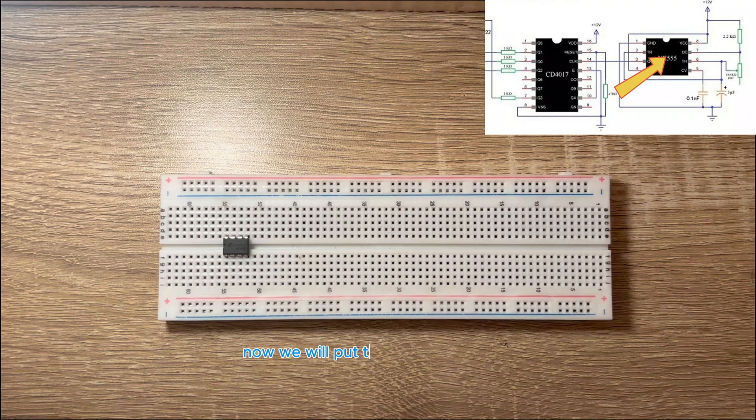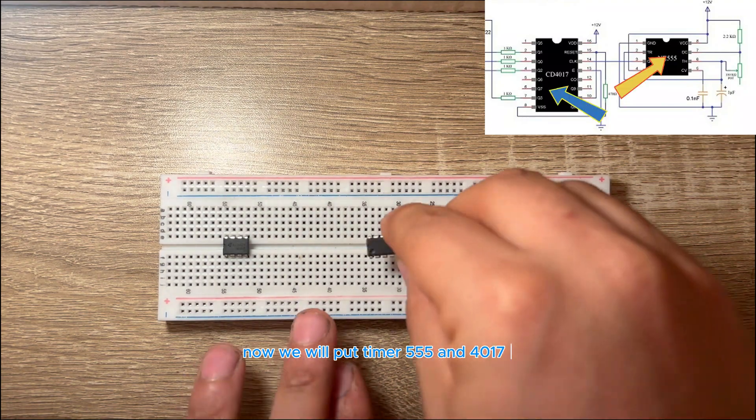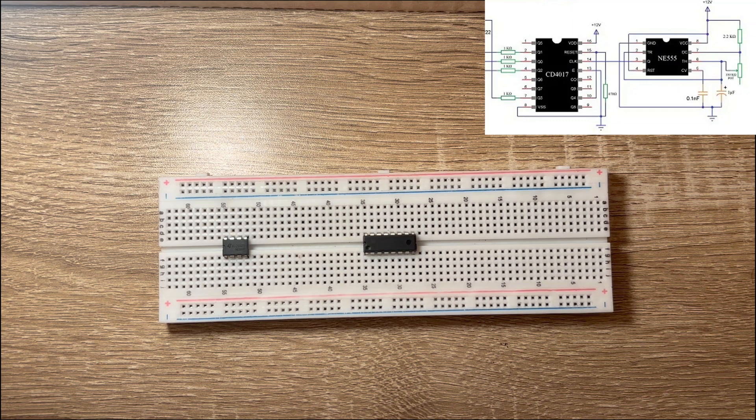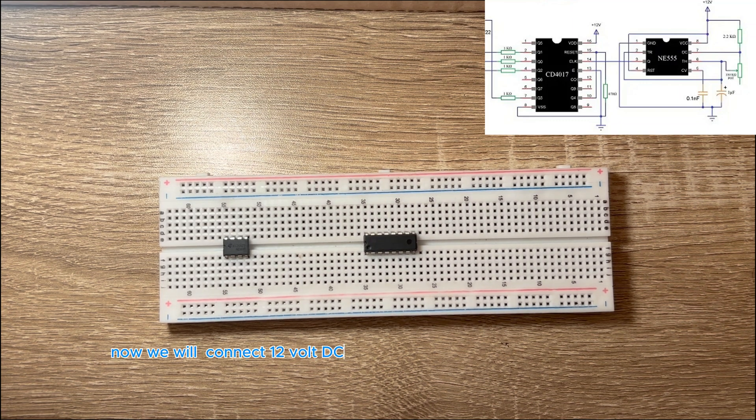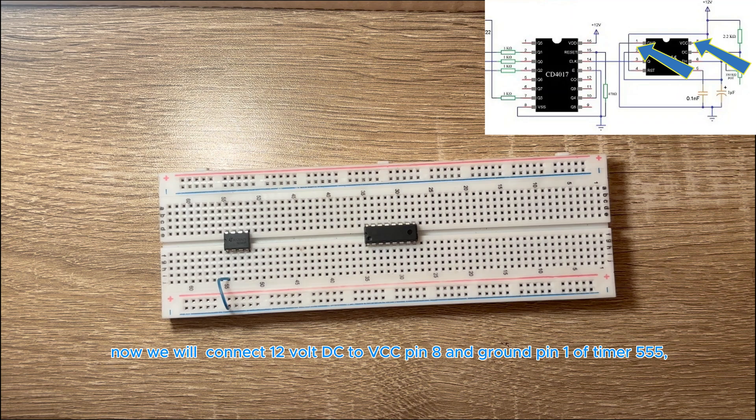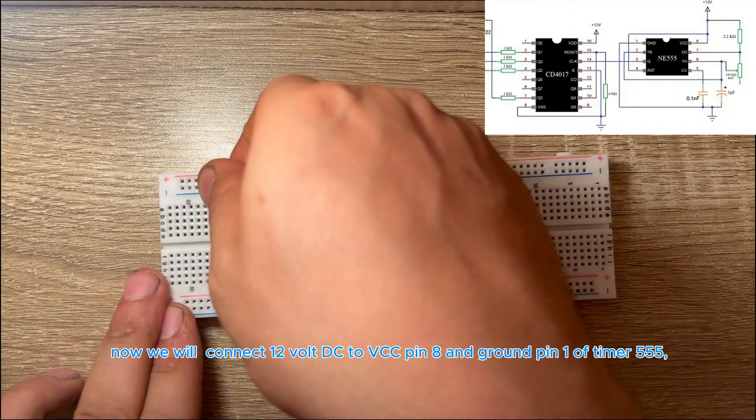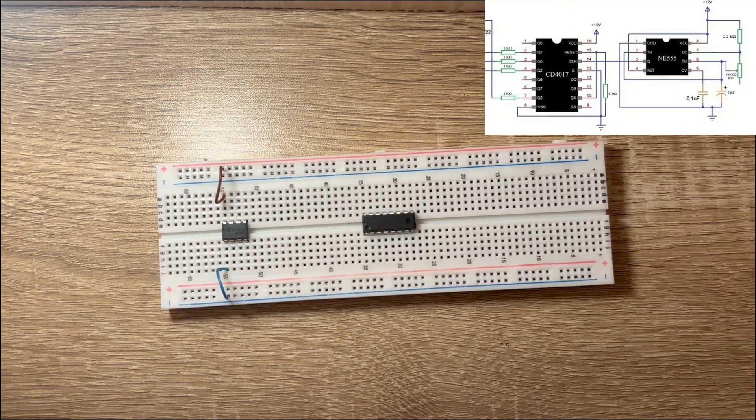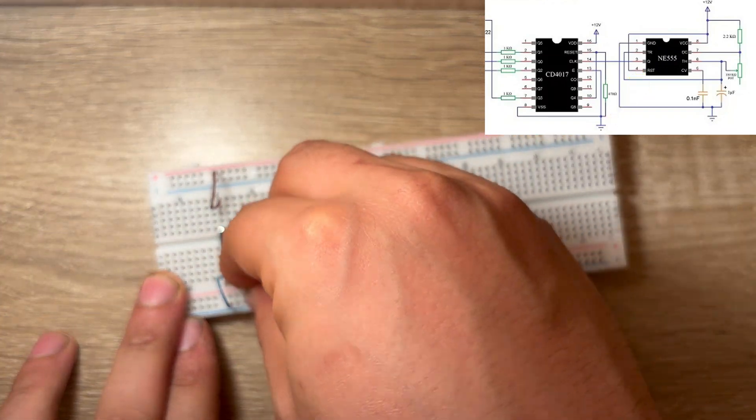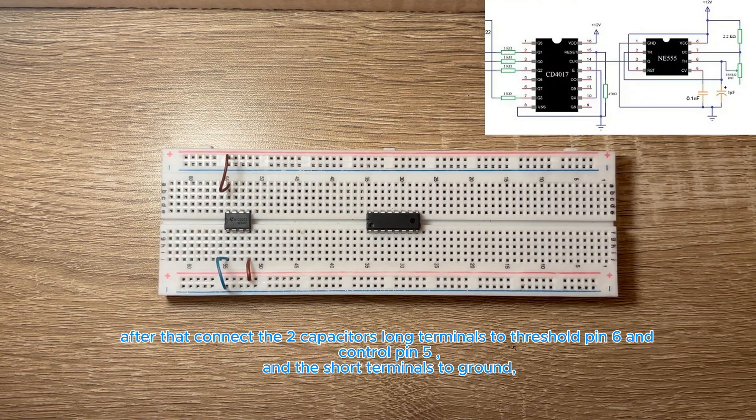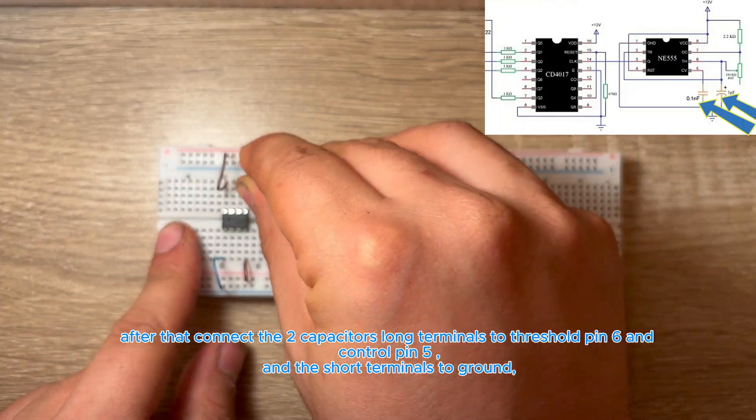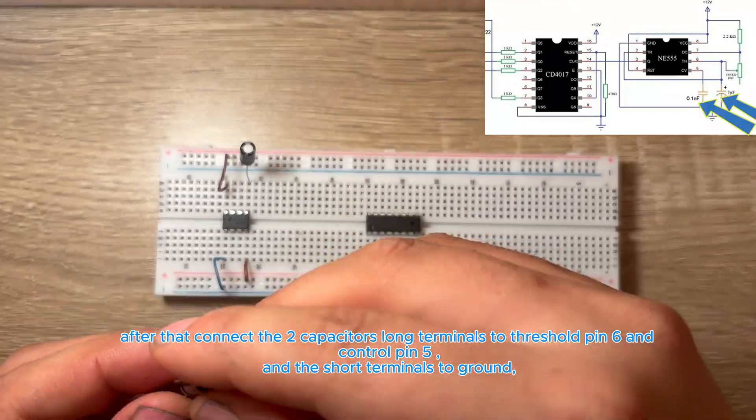Now we will put timer 555 and 4017 ICs. Now we will connect 12V DC to VCC pin 8 and ground pin 1 of timer 555. Connect reset pin 4 to positive voltage. After that, connect the two capacitors long terminals to threshold pin 6 and control pin 5, and the short terminals to ground.